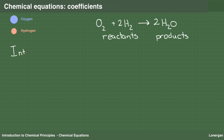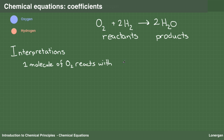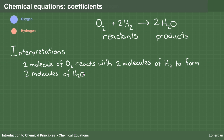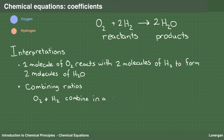There are many ways to interpret the coefficients of a chemical equation. The simplest is as the number of molecules in a reaction involving molecular compounds. One molecule of O2 reacts with two molecules of H2 to form two molecules of water, H2O. More generally, the coefficients represent combining ratios. O2 and H2 combine in a one-to-two ratio to form H2O.